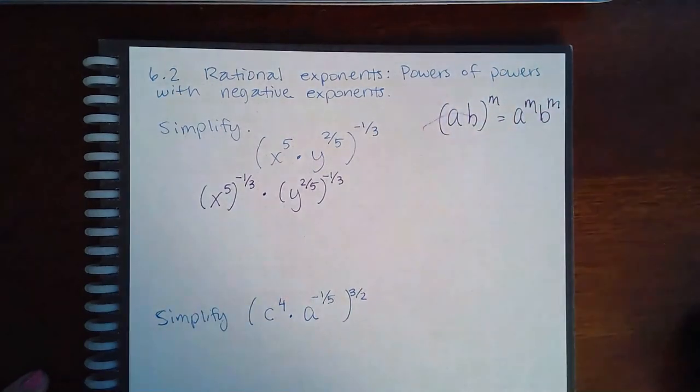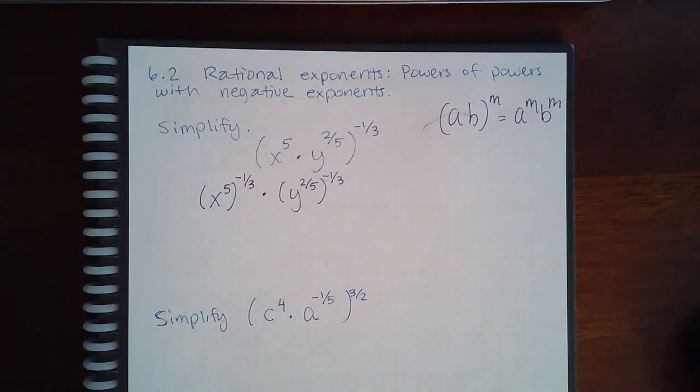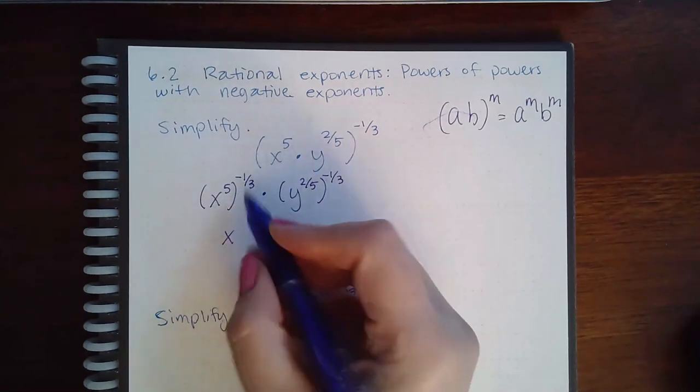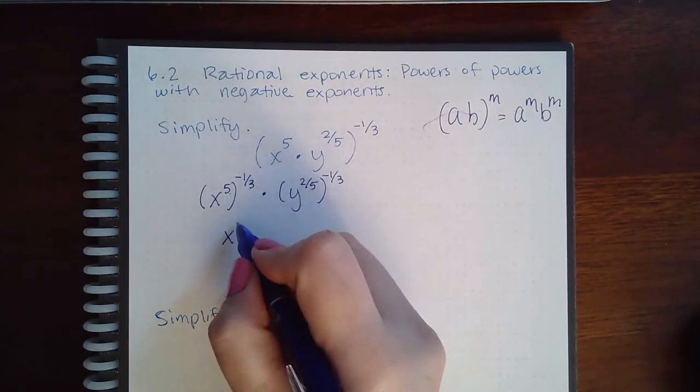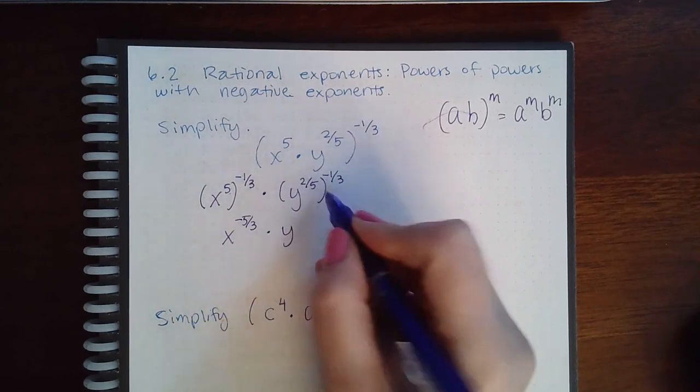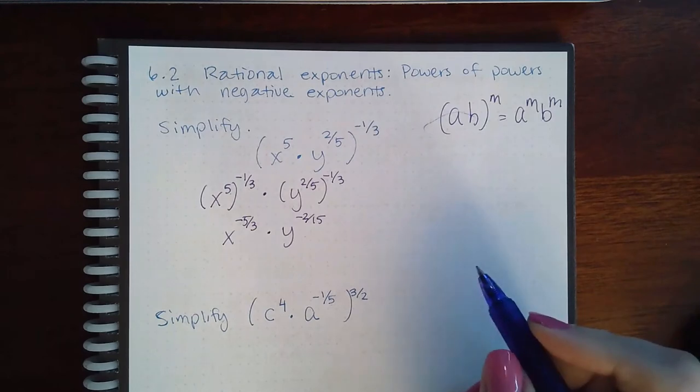Here I'm going to multiply these exponents together because that's the power to a power rule. I get negative five thirds and then if I multiply this one I get negative two over fifteen. Now the only thing is they don't want me to write my answers with negative exponents.